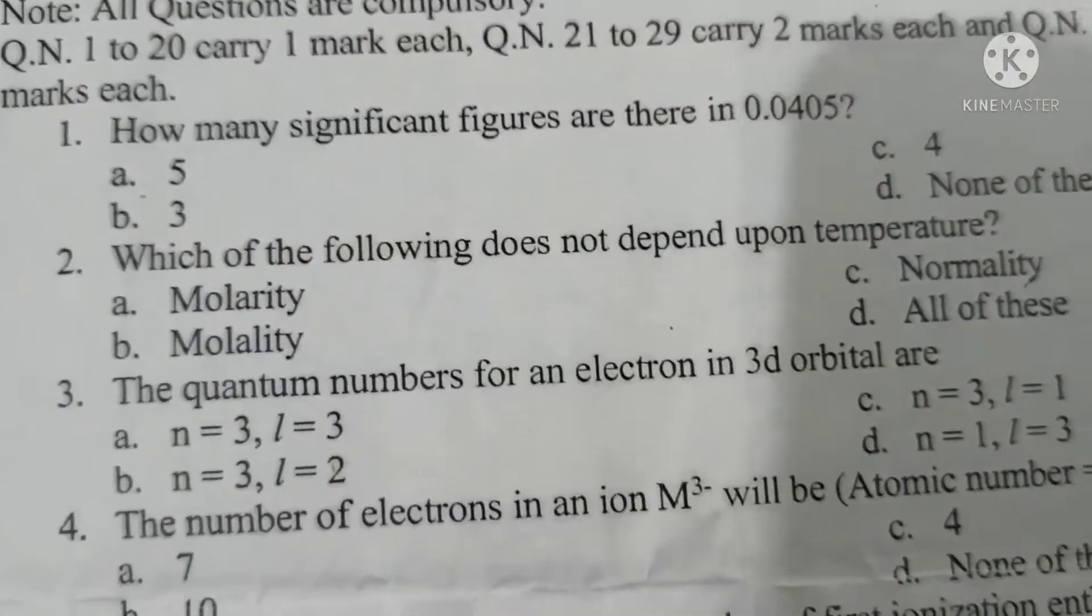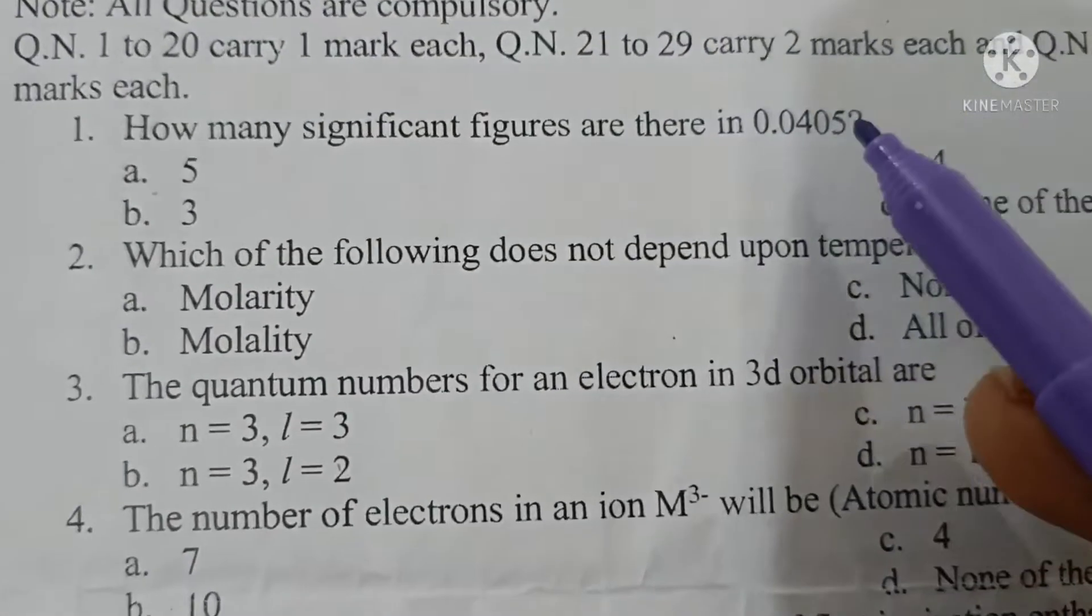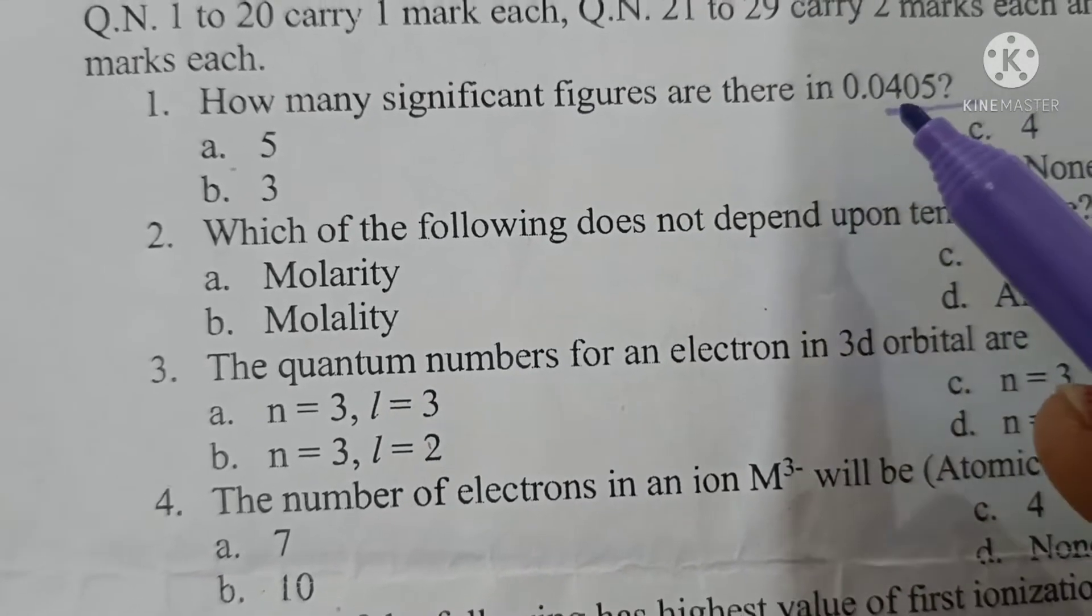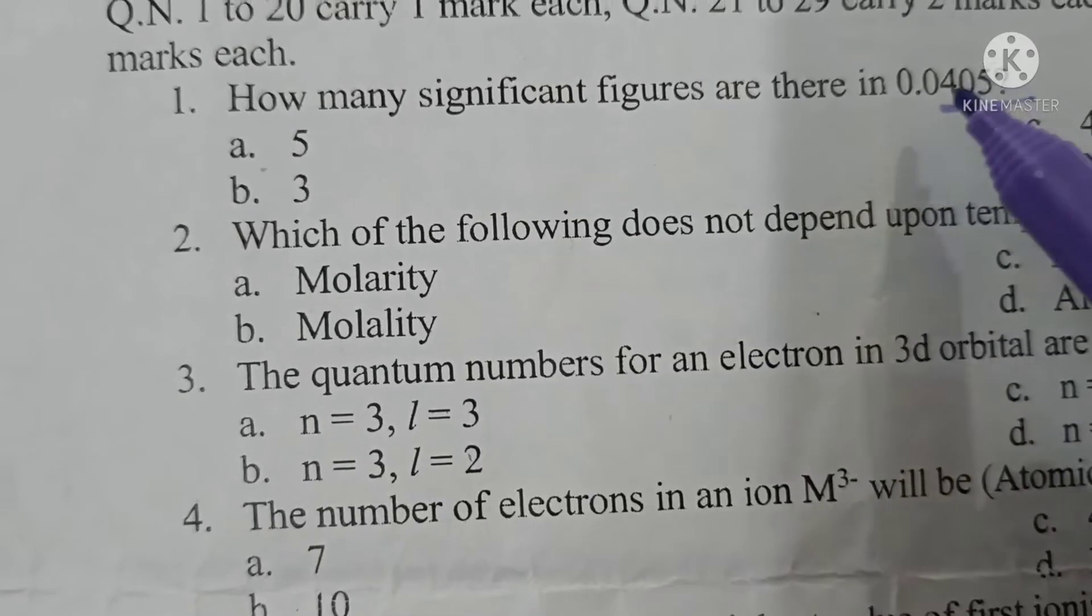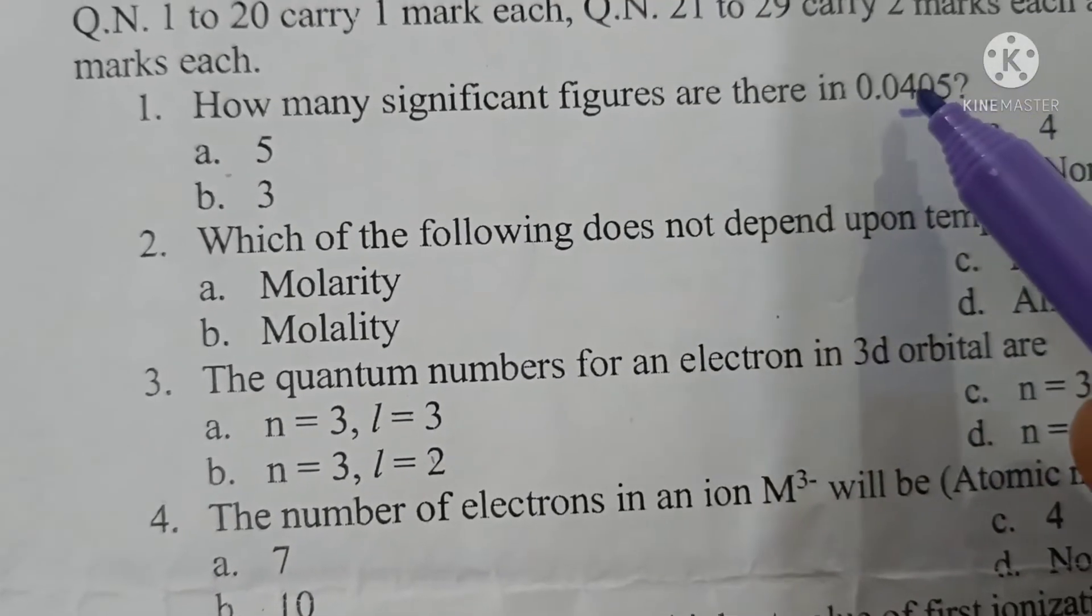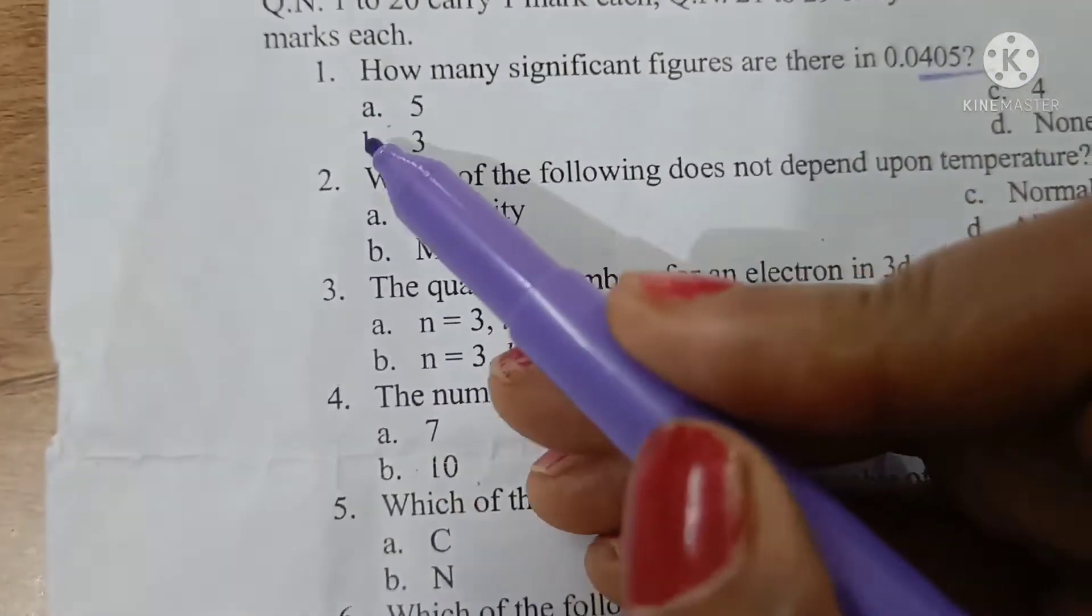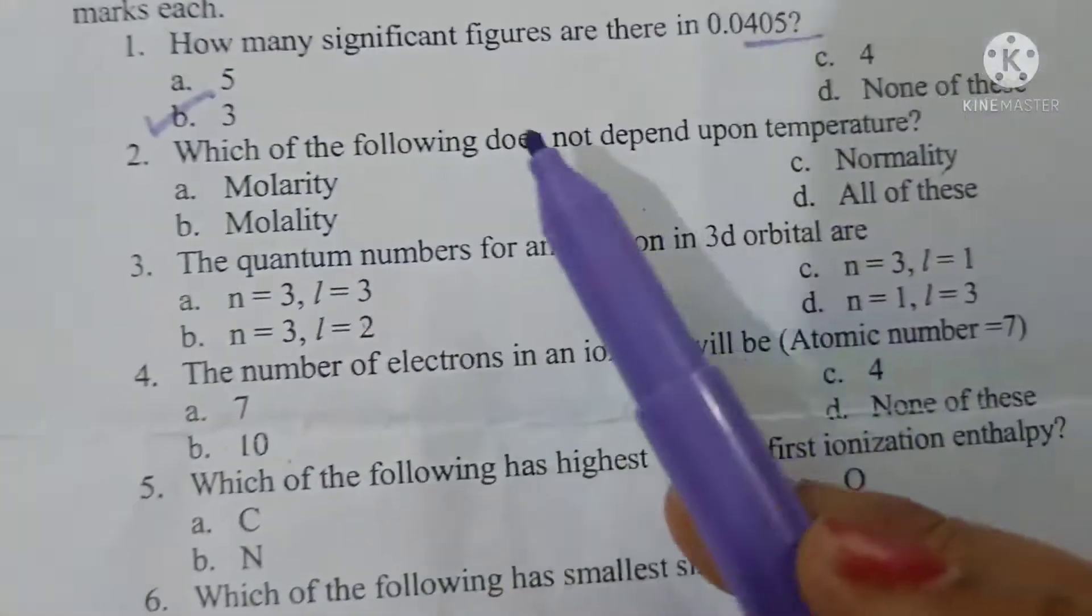How many significant figures are there in 0.0405? As the number of significant figures starts from the first non-zero digit, we start from here 4, 0, 5. So there are three significant figures. Option B is the correct answer.